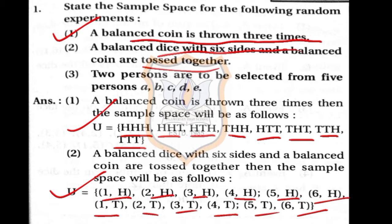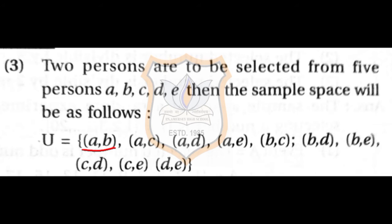The third question: two persons are to be selected from five persons A, B, C, D, E. Keeping A constant, you can select A,B; A,C; A,D; and A,E. Then keeping B constant — since A,B is already done — you get: B,C; B,D; and B,E.